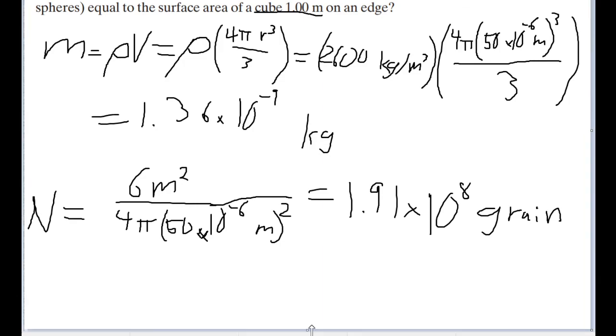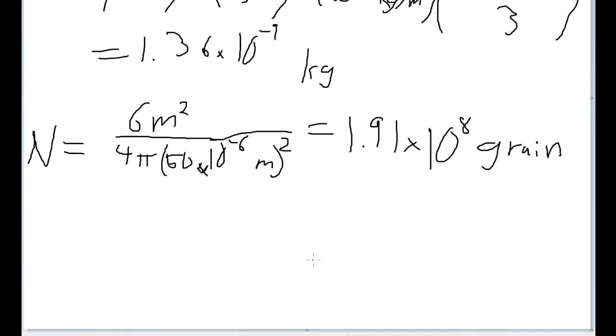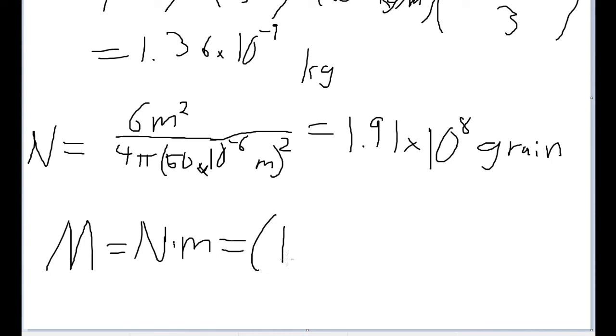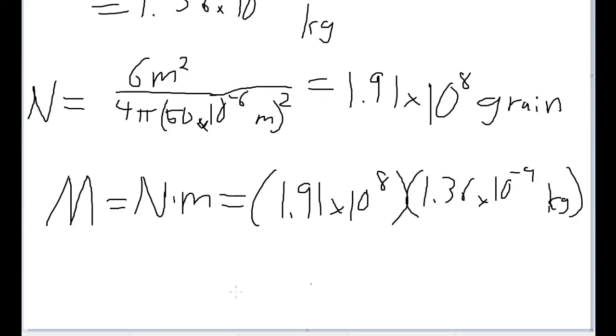Now, for the final step, now we want to find out what the actual total mass would be of all this put together. So the total mass of all these grains of sand that we'd need to fill up that space is going to be equal to the number of grains of sand, n, times the mass of one grain of sand, or the small m I'm using here. And so plugging in our values here, that is 1.91 times 10 to the eighth for the grains of sand, multiplied by the mass, or 1.36 times 10 to the negative 9 kilograms. And once I'm doing this final calculation we get here, the answer we get for the total mass is 0.26 kilograms.